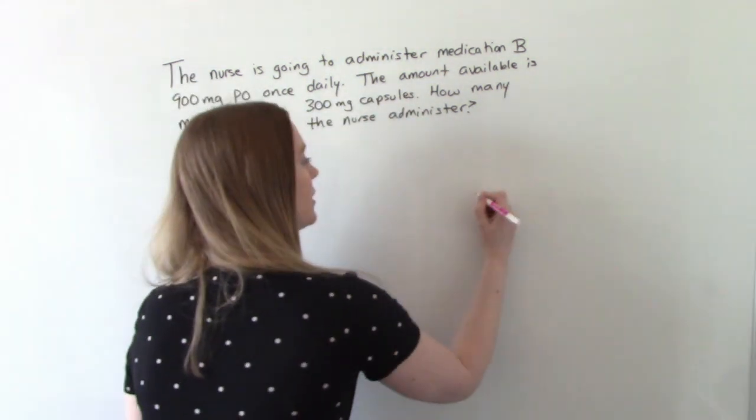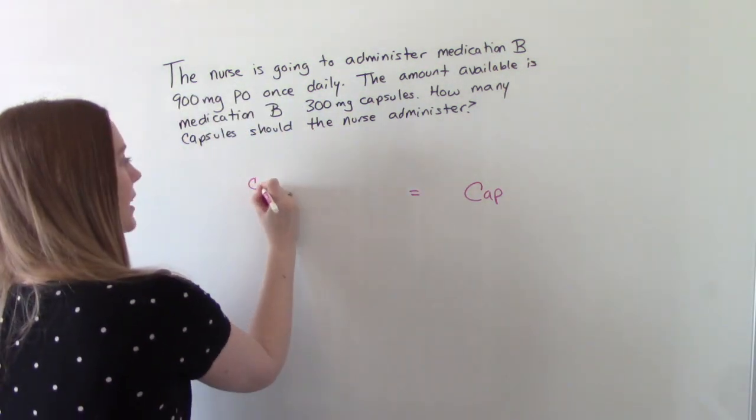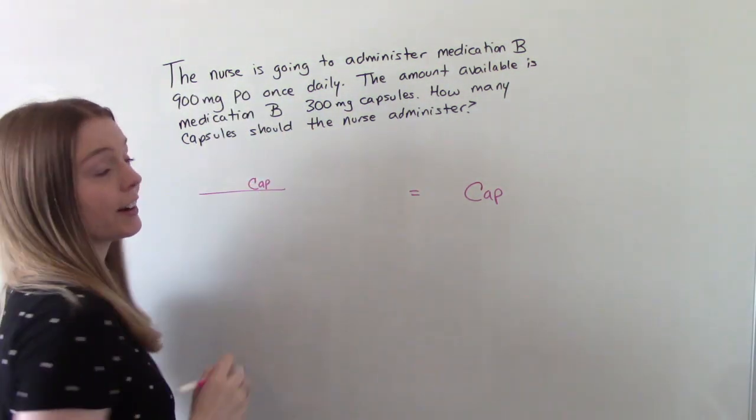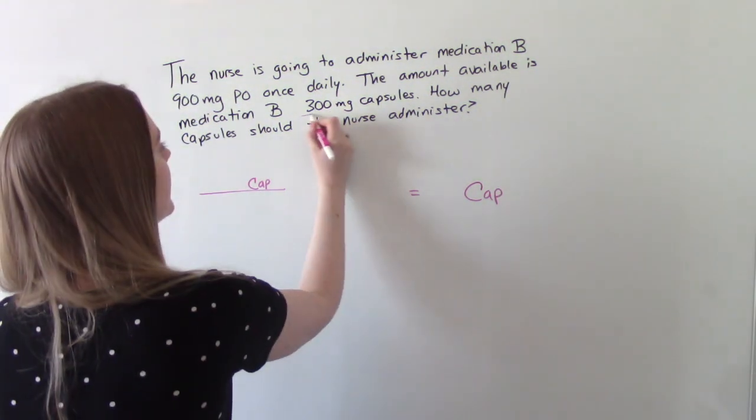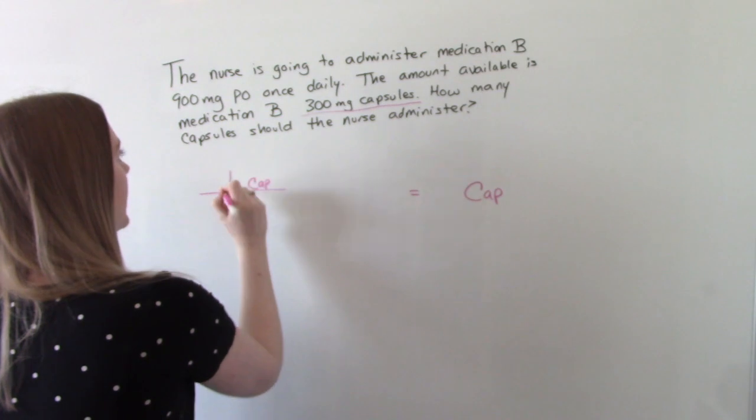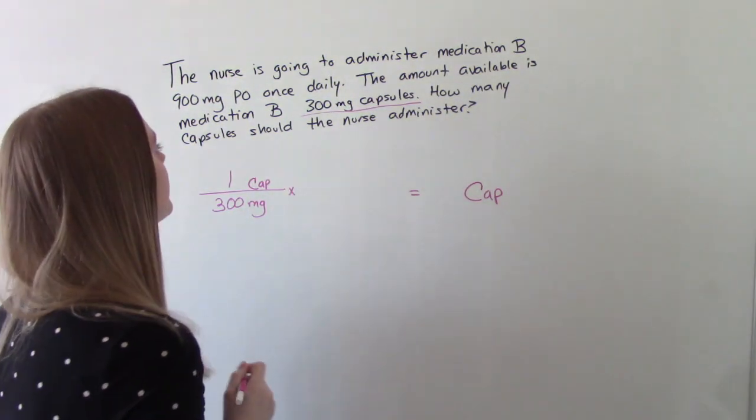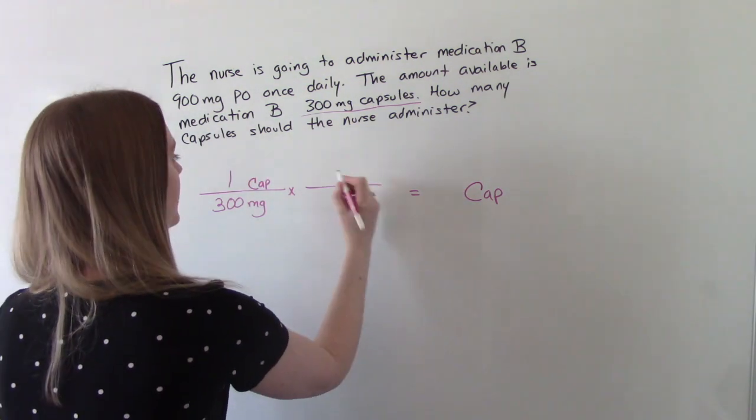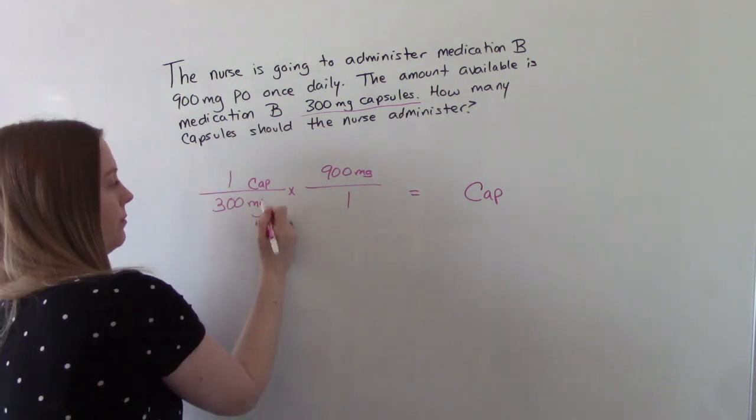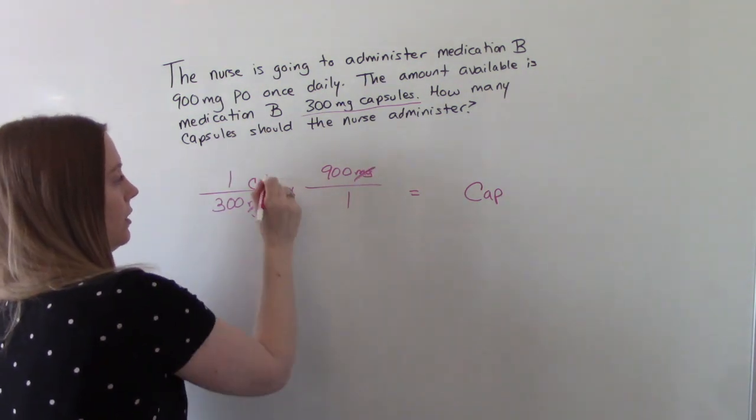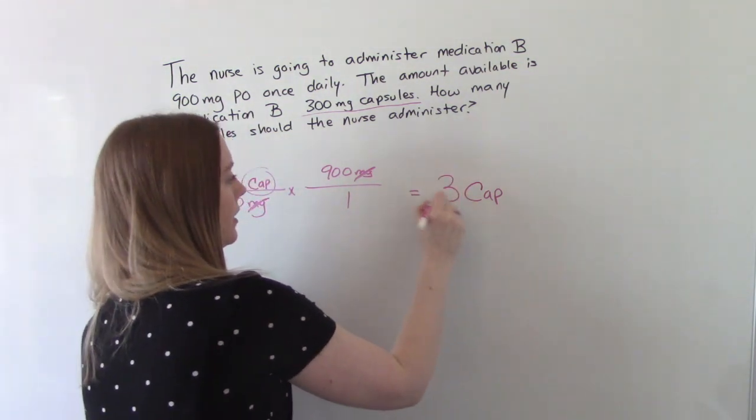So we want to know capsules. So just like always, if it's going to be in our answer, it needs to be in our numerator. Where do we see it here in the problem? Here. So one capsule is 300 milligrams. And we want to give 900 milligrams. So we'll put 900 milligrams over one. The milligrams will cancel. We'll have capsules left. Do the math and you get three.